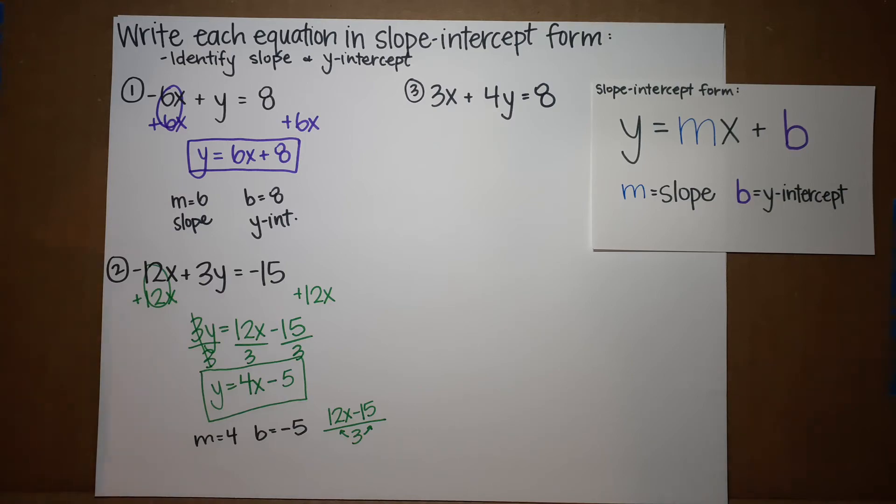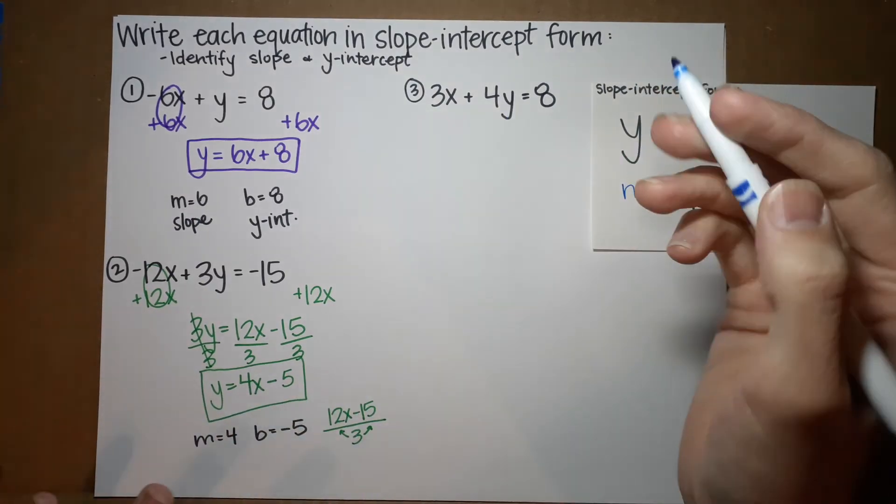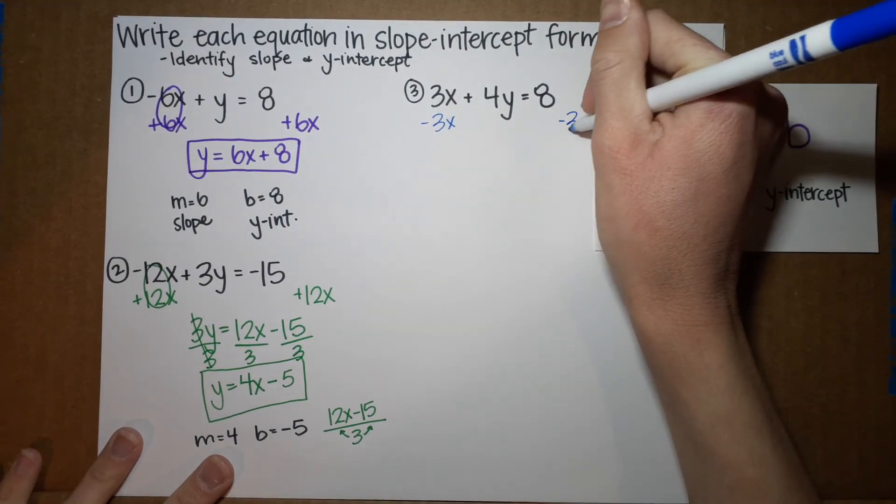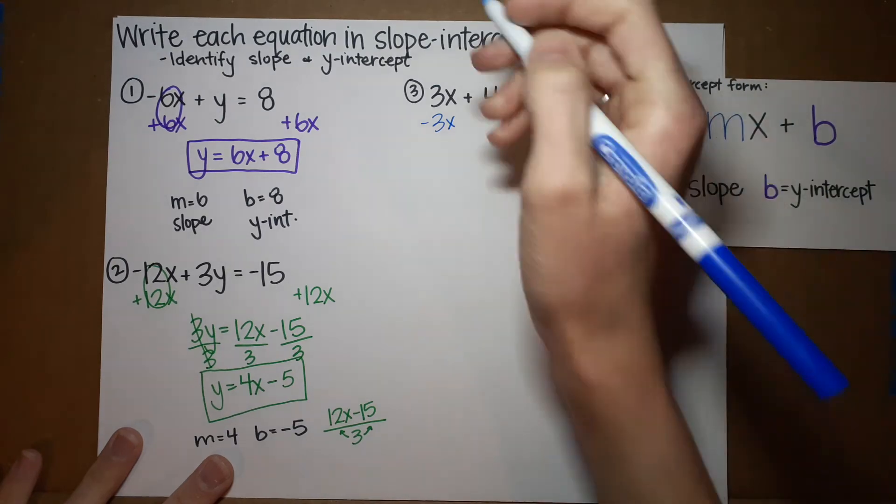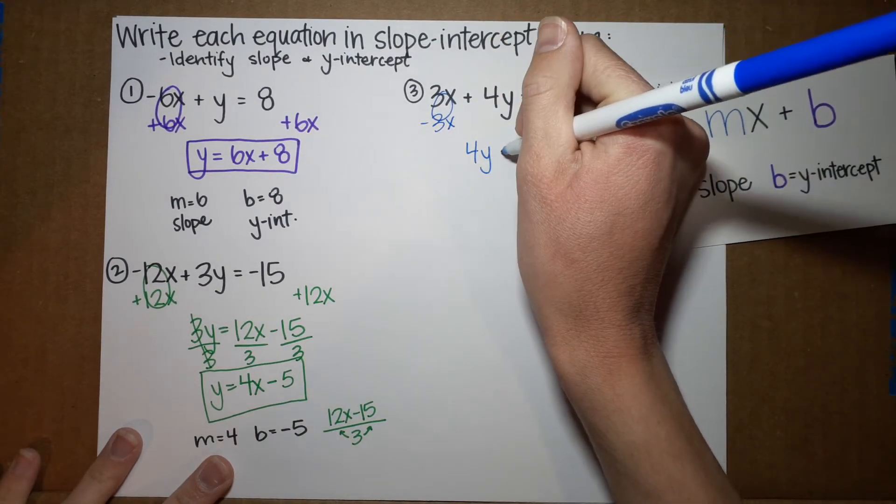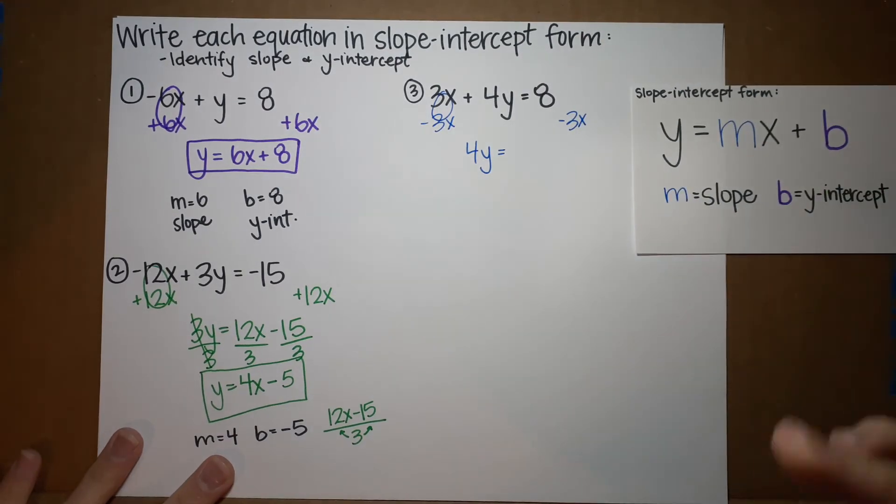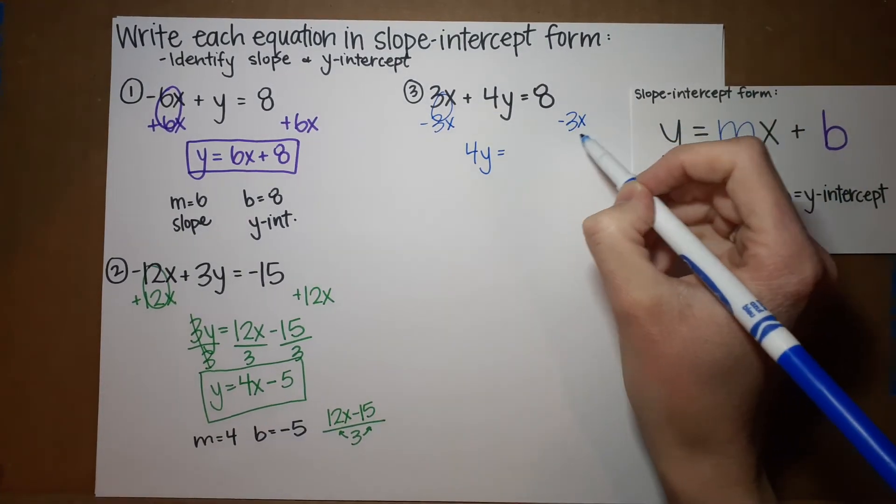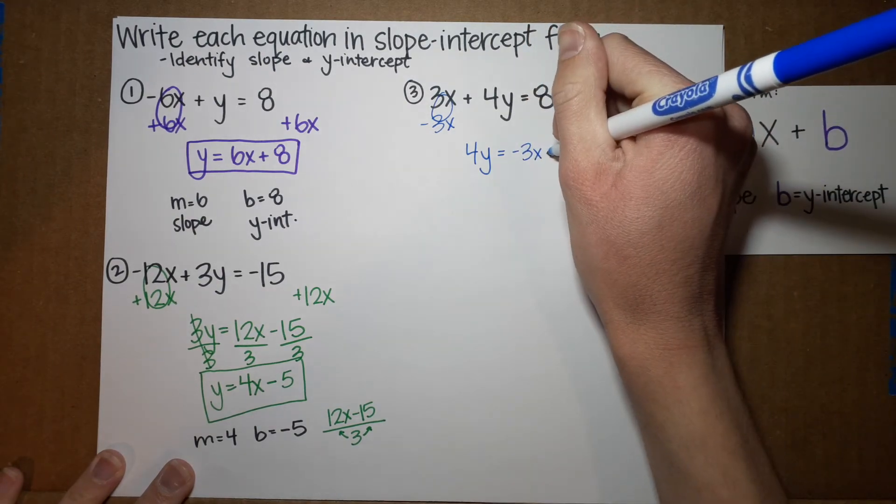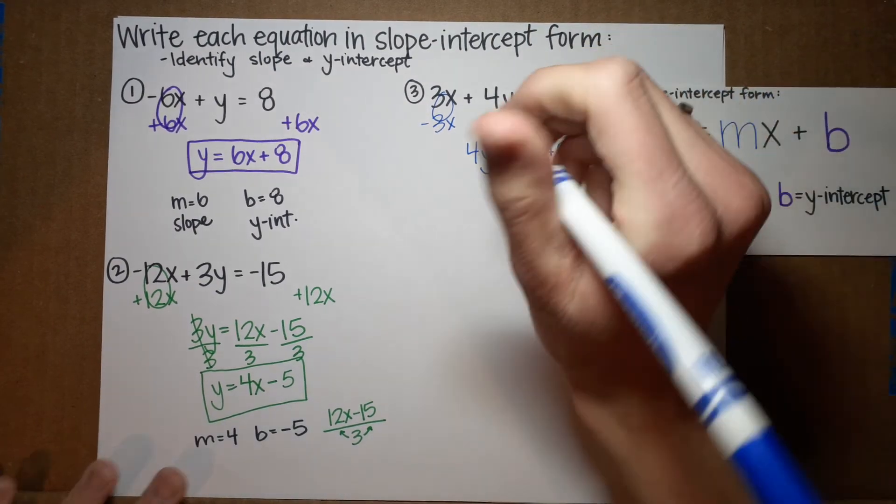All right. Number 3. We're going to use blue. Okay. Same thing. I want y by itself. I need to get rid of this 3x. So, I subtract. All right. These go away. I'm left on this side with 4y equals. I've said it twice before. We're going to write the x first. So, I've got negative 3x plus 8.